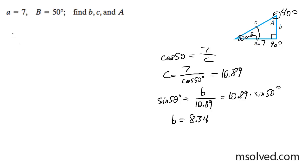So up here, angle A is equal to 40 degrees, B is equal to 8.34, C is equal to 10.89. That's it.